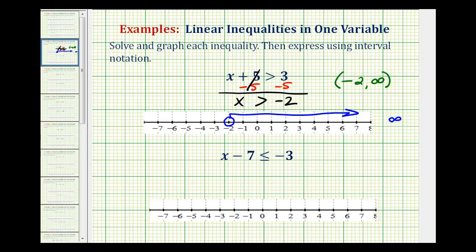Looking at the second example, we have x minus 7 is less than or equal to negative 3. So in order to isolate x on the left side of the equation, we want to undo minus 7. So we'll add 7 to both sides of the inequality. This would be 0. So we have x is less than or equal to negative 3 plus 7 is positive 4.